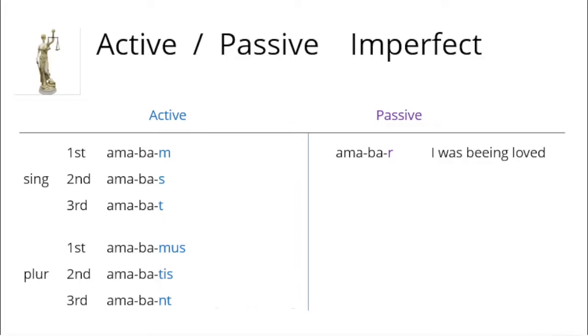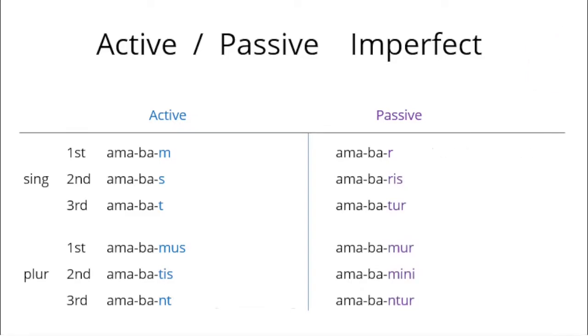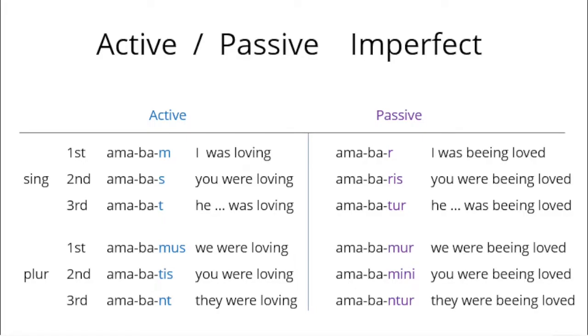We start the active endings away and we add the passive endings. Then we can conjugate the passive forms. Amabar, amabares, amabatur, amabamur, amabarmini, amabantur. And the English translation. Now learn the active and passive forms of Amare and the English translation. Stop the video when you are ready, then go on.